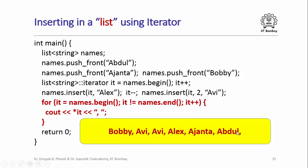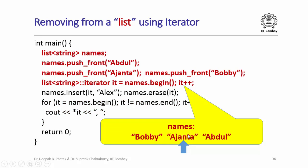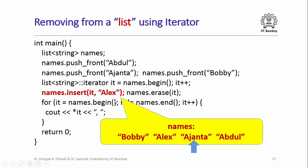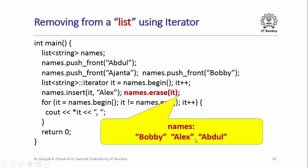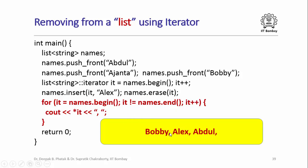I can also remove an element from a list using an iterator. The code in brown creates the list and it is now pointing to Ajanta. Then names.insert(it, 'Alex') inserts Alex just prior to Ajanta, with it still pointing to Ajanta. Now when I say names.erase(it), Ajanta is erased from the list. The remaining list is: Bobby, Alex, Abdul. Printing the elements gives: Bobby, Alex, Abdul.